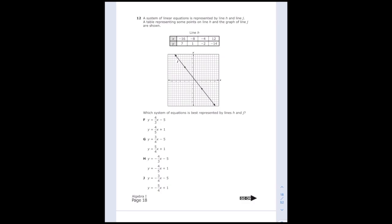This is number 12 from the 2022 Algebra 1 EOC. A system of linear equations is represented by line H and line J. A table representing some points on line H and the graph of line J are shown. Which system of equations is best represented by lines H and J?